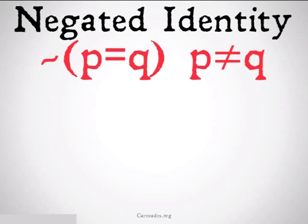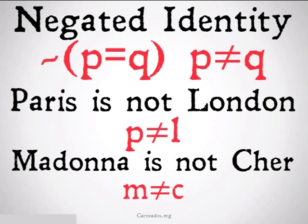We're also going to be introducing another symbol that's going to be negated identity. It's the slash through the equal sign. What that means is it's not the case that P is equal to Q. Examples might be Paris is not London, P does not equal L, or Madonna is not Cher, M does not equal C.